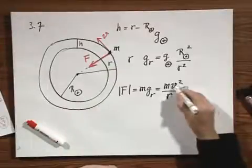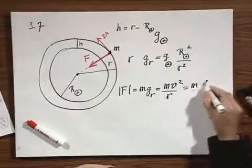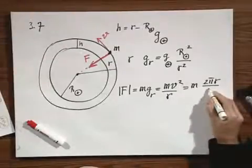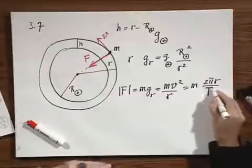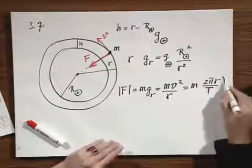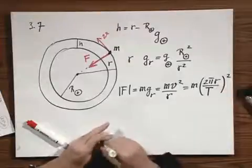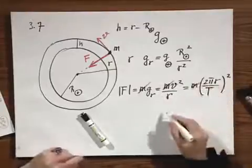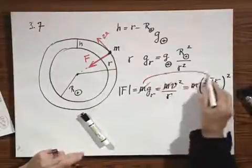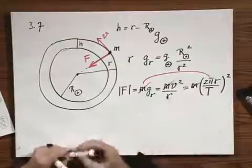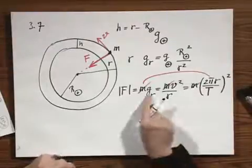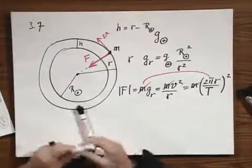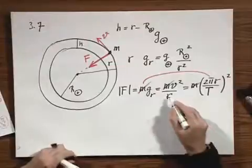Now, I can replace this v by the circumference 2 pi r divided by the time to go around t. This is now the period in seconds to go around, and I can square that. Now, the m's cancel, and if I combine this part of the equation with that part of the equation, then I find that gr is this quantity. Oh, by the way, I forgot a little r here. This r must be here.